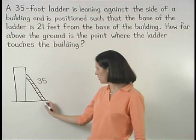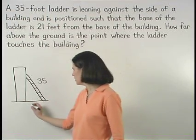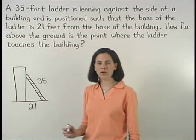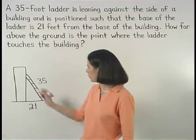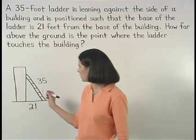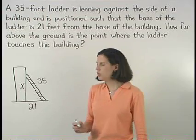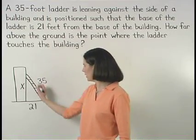The distance between the base of the ladder and the base of the building is 21 feet. And we're asked how far above the ground is the point where the ladder touches the building. So let's use x to represent this distance. Notice that we have a right triangle.